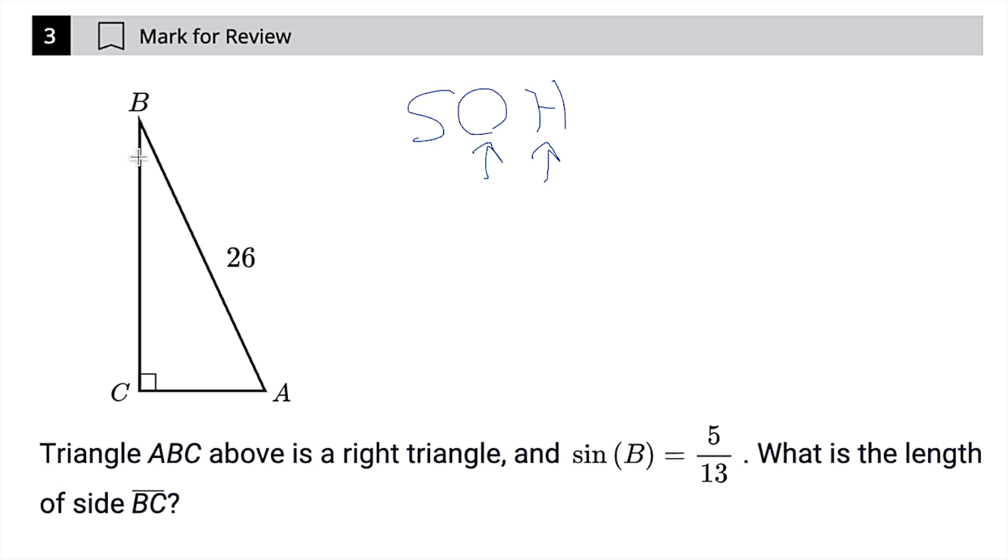So in this case, sine of B would be the opposite, that's across the street from B, so CA over here, over the hypotenuse, which is our longest side, in this case BA. And we're going to ignore that 26 for a second. Just remember that this is equivalent to 5 over 13.